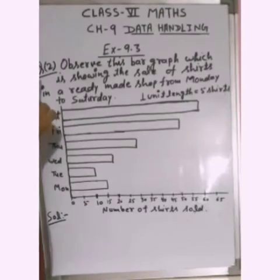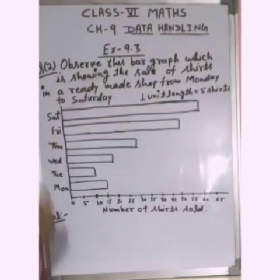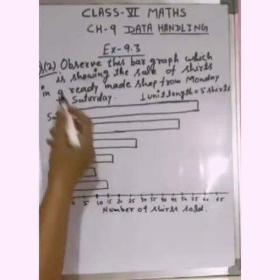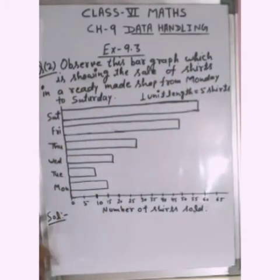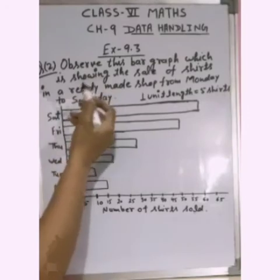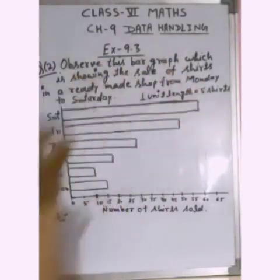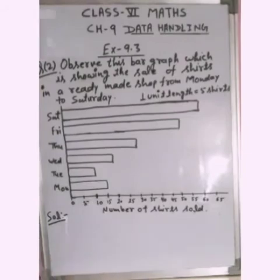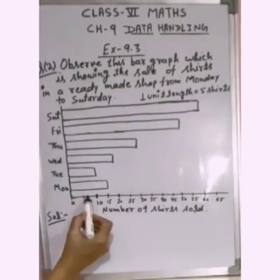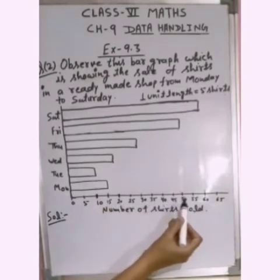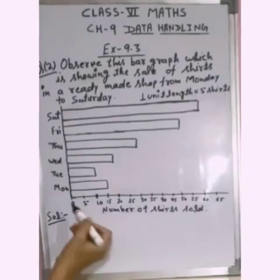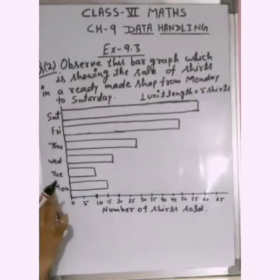Now, Question 2 of Exercise 9.3 is: Observe this bar graph which shows the sale of shirts in a ready-made shop from Monday to Saturday. The bar graph shows the number of shirts sold each day. The given scale is 1 unit length equal to 5 shirts. The days given are Monday, Tuesday, Wednesday, Thursday, Friday, and Saturday.